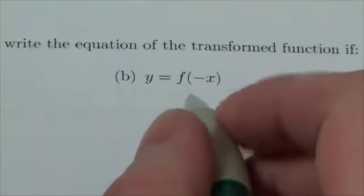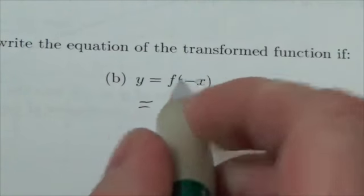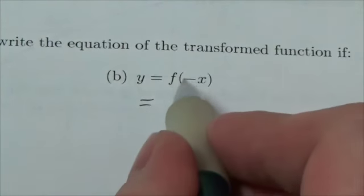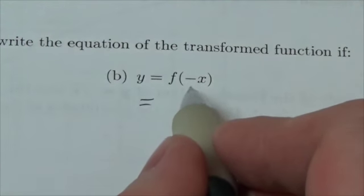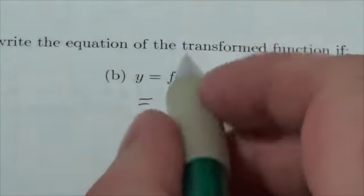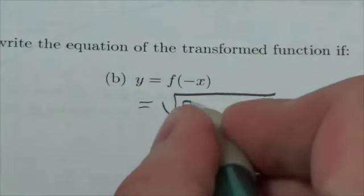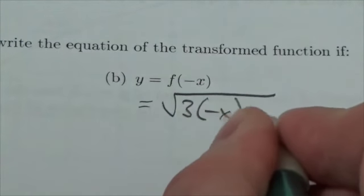And this time we're putting the negative inside the function. Now, what that means is that in the function here, the independent variable is now no longer going to be x, it's going to be negative x. So in the function, I'm going to replace x with negative x.